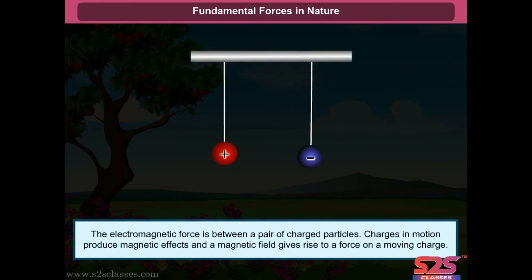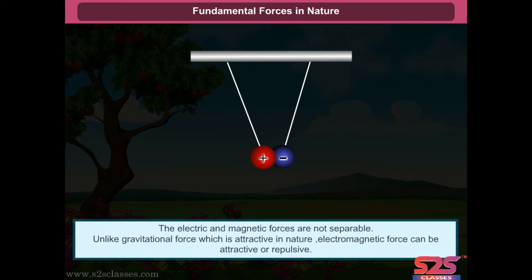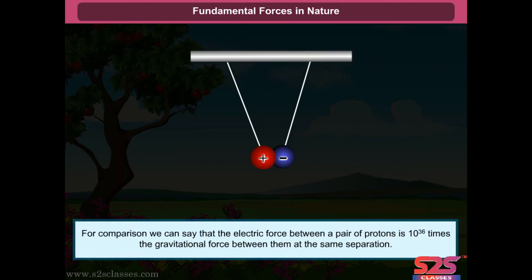Electromagnetic force. The electromagnetic force is between a pair of charged particles. Charges in motion produce magnetic effects and a magnetic field gives rise to a force on a moving charge. The electric and magnetic forces are not separable. Unlike gravitational force which is attractive in nature, electromagnetic force can be attractive or repulsive. For comparison, the electric force between a pair of protons is 10 raised to the power of 36 times the gravitational force between them at the same separation.